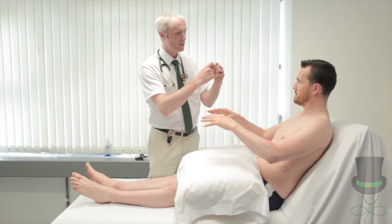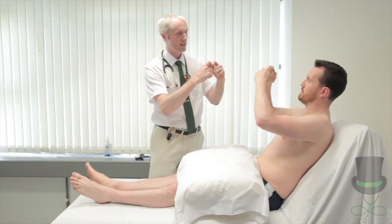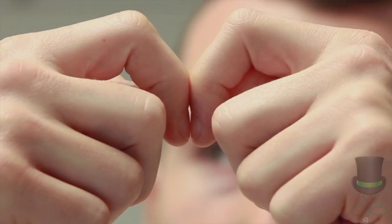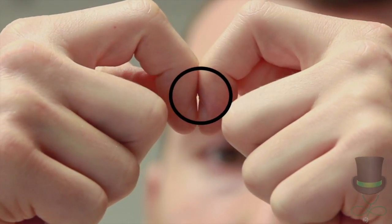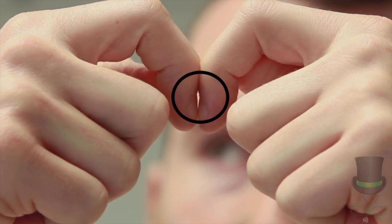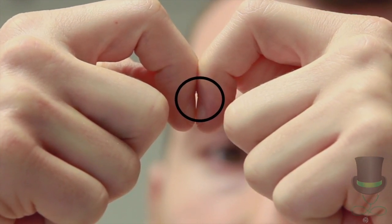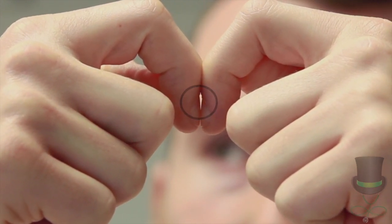Could you put your two index fingers together like that, the nails together like that? To perform Shamrat's test, ask the patient to oppose the nails of the index fingers of each hand. Look for light at the nail bed between the two nails.